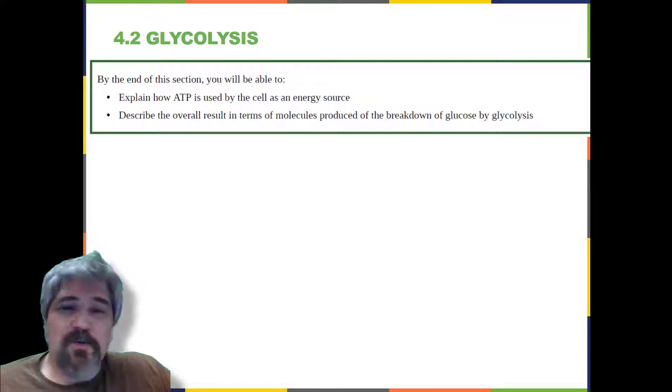By the end of this section, you will be able to explain how ATP is used by the cell as an energy source, and describe the overall result in terms of molecules produced of the breakdown of glucose by glycolysis.